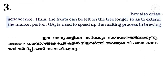2. Gibberellins cause fruits like apple to elongate and improve its shape — gibberellins help in increasing the size and improving the shape of fruit crops like apple. 3. They also delay the senescence. Thus, the fruits can be left on the tree longer so as to extend the market period. Gibberellins delay senescence in plants, helping to extend the shelf and market life of fruits.